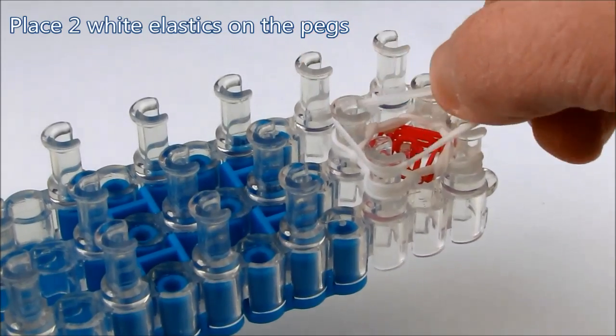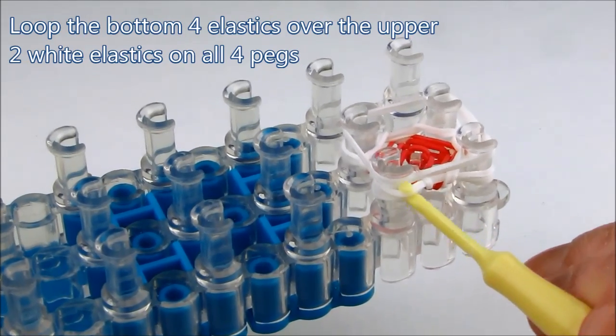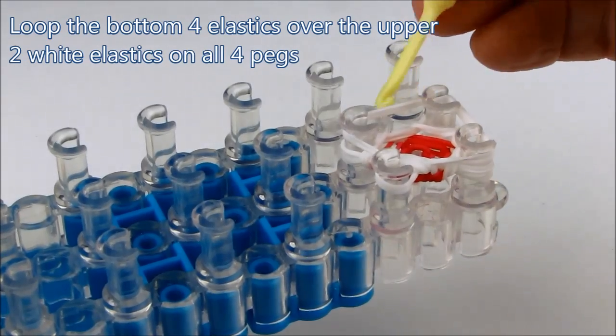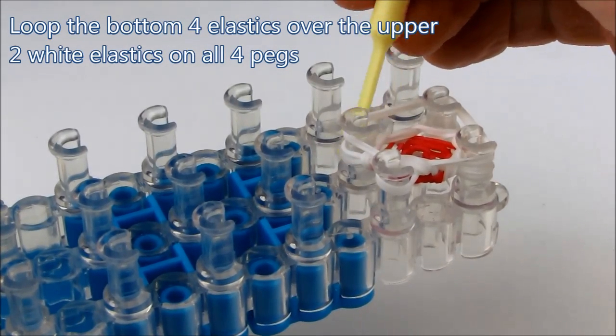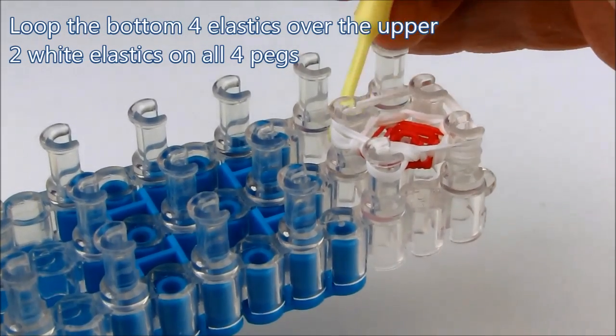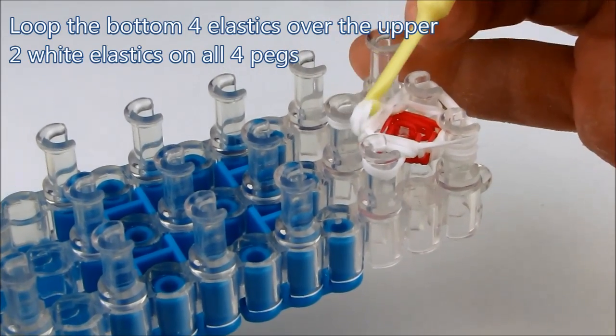Now loop the bottom four elastics over the upper two white elastics on all four pegs. This one is the trickiest because there are quite a few elastics that you have to pull over.